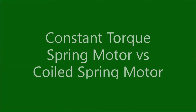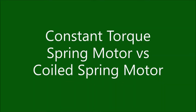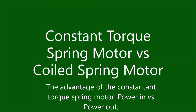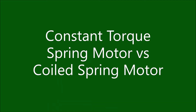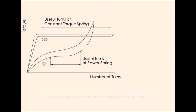The advantage of the constant torque spring motor — power in versus power out. As you can see, there are more useful turns in the constant torque spring motor versus the regular spring.